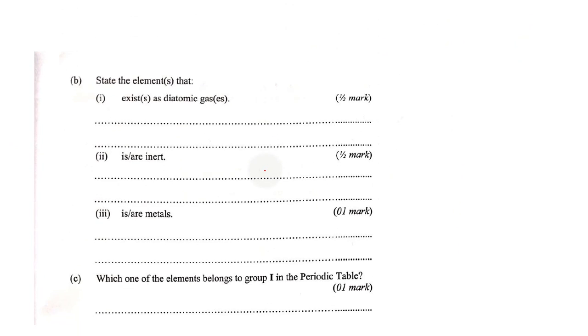Let's now have a look at part B. State the elements that exist as diatomic gases. So we have half a mark, probably it will be 1. So here we have Q with configuration 2, T with 2,5, X with 2,8,1, Y with 2,8,3, and Z with 2,8,6.